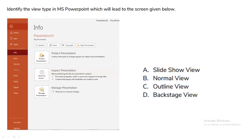The next question is: identify the view type in MS PowerPoint that leads to the screen shown below. If we take the backstage view, we will see this type of interface on our screen. So option D — backstage view — will be the correct answer for this question.